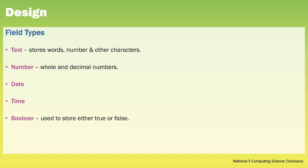A database can store different types of data. We can have text, which are words, numbers or other characters. We have numbers, whole or decimal. Then we can also store date and time. And lastly, boolean, which is used to store either true or false.